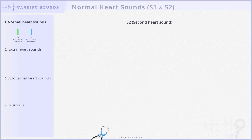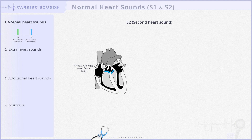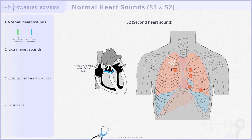Now let's discuss S2. As previously mentioned, S2 occurs when the aortic and pulmonary valves close. It's typically best heard in the aortic and left parasternal areas.